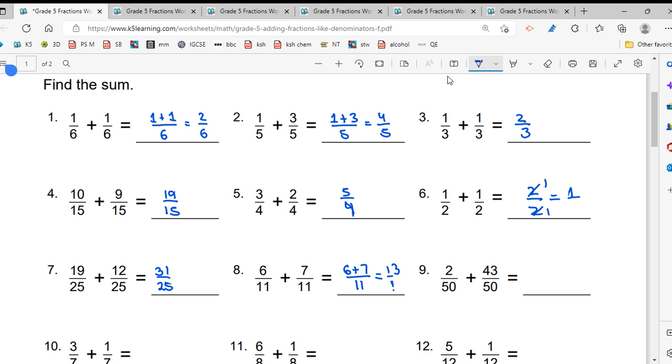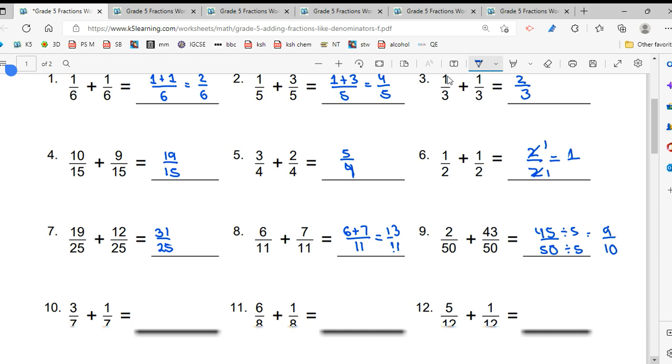45 into 50 is the next one. 45 upon 50. Ab isse na better simplify kar sakti ho, Dono 5 se divide ho sakta hai. To 5 nines of 45 and 5 tens of 50. Thik hai?